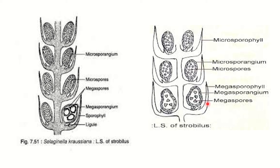Each megasporangium is also a stalked structure, but it is lobed and bigger than the microsporangium. Its color varies from whitish-yellow to red. Its wall is also two-layered, followed by a single-layered tapetum. In the young sporangium, a mass of sporogenous cells is present inside the wall, which separate into megaspore mother cells. All megaspore mother cells normally degenerate except one — one remains functional while the rest degenerate.